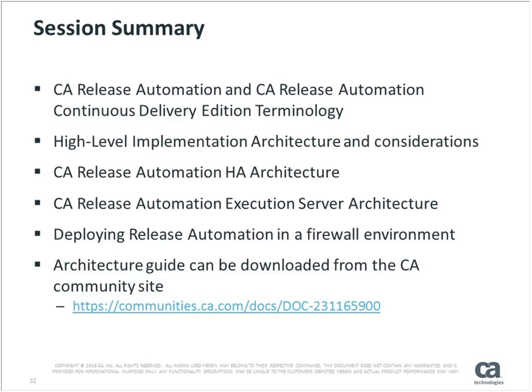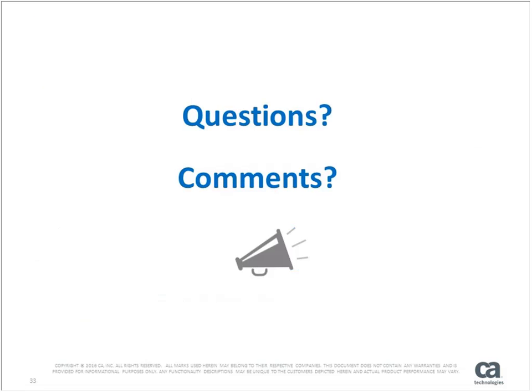In summary, we covered the high-level architecture of Release Automation, high availability, firewall architecture, and execution server routing. Everything we discussed is available to download from the community — there's an architecture document on the community site with much more detail. Go there and download it.